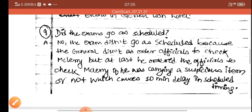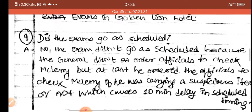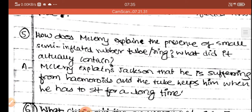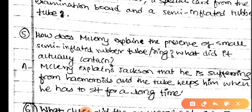Okay, joh textual cheezein hain — number cutne ke liye bohot saari cheezein hoti hain. McClory explains that he is suffering from hemorrhoids, so he uses the ring.